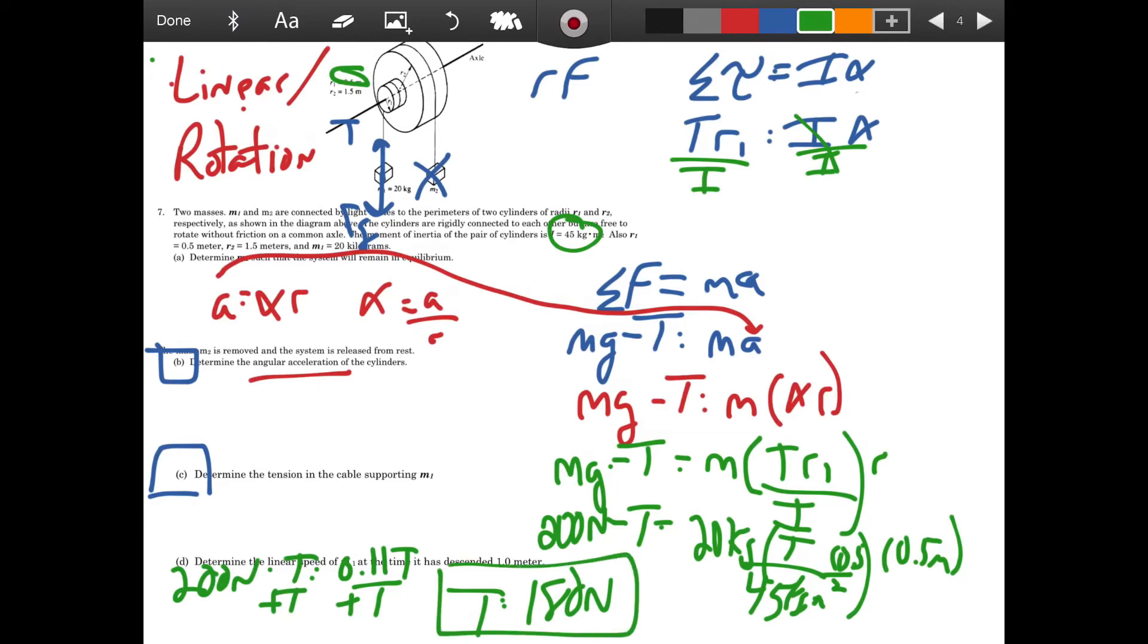Perfect. I expect it to be a little less than this 200 newtons because this object is accelerating downward. So conceptually, that makes sense. Now I have the tension. So it should be relatively simple to figure out if I use this line. We plug in 180 newtons times r1 0.5 equals 45 kilograms times meters squared times alpha. So 180 times 0.5 divided by 45. And I get that the rotational acceleration is equal to 2 radians per second squared.